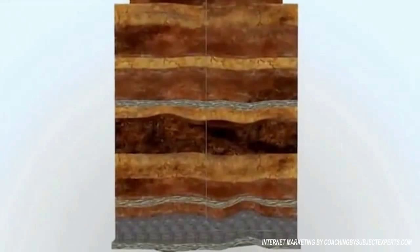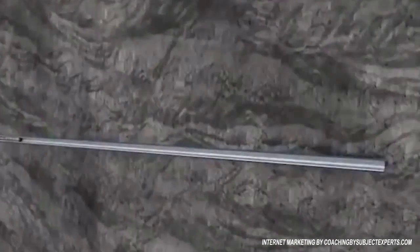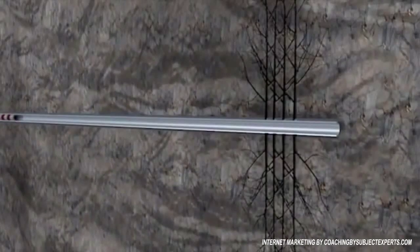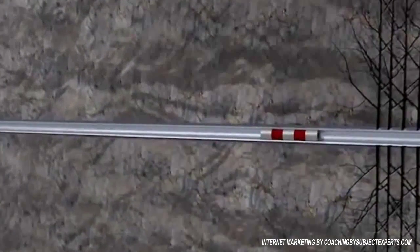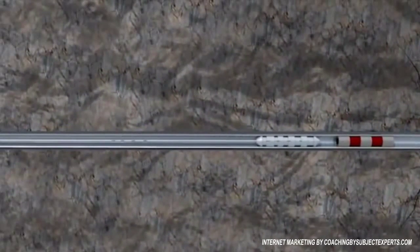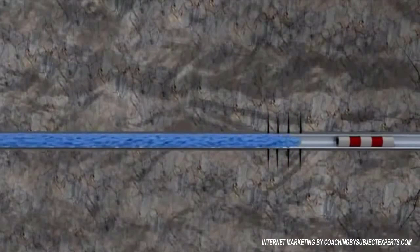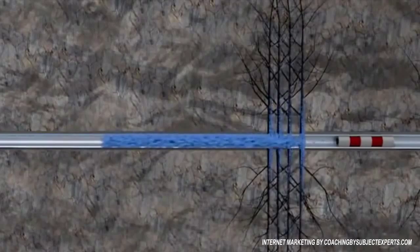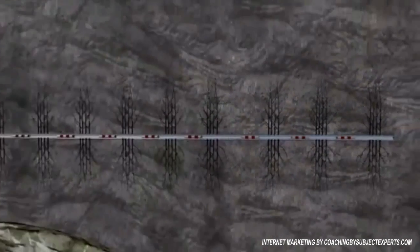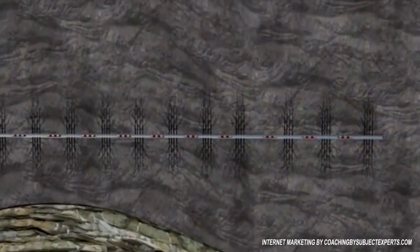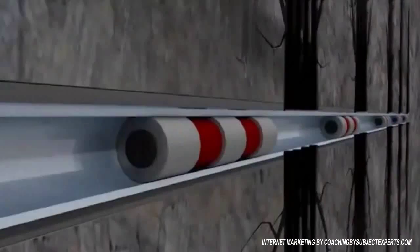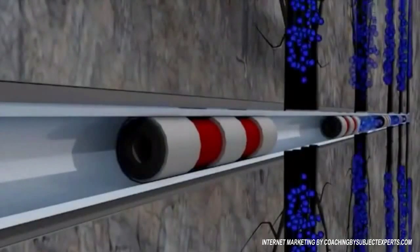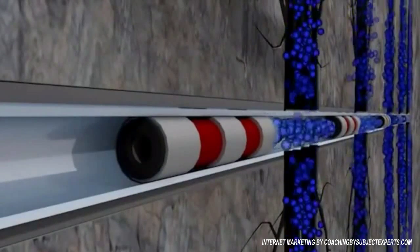This initial stimulation segment is then isolated with a specially designed plug and the perforating guns are used to perforate the next stage. This stage is then hydraulically fractured in the same manner. This process is repeated along the entire horizontal section of the well, which can extend several miles. Once the stimulation is complete, the isolation plugs are drilled out and production begins.